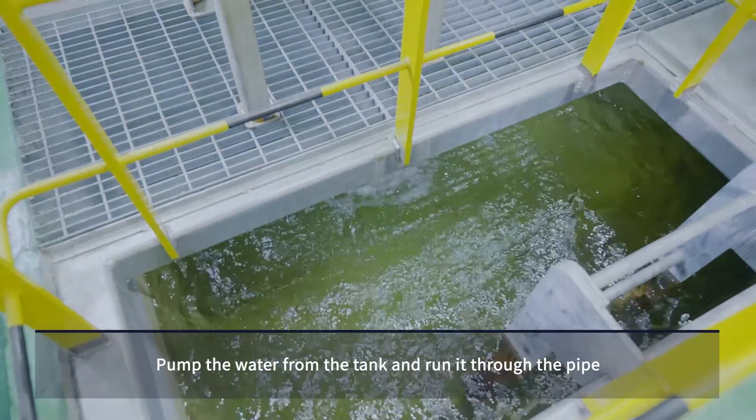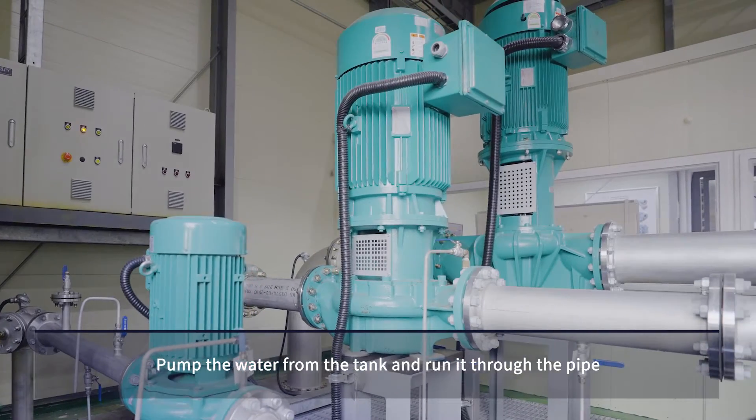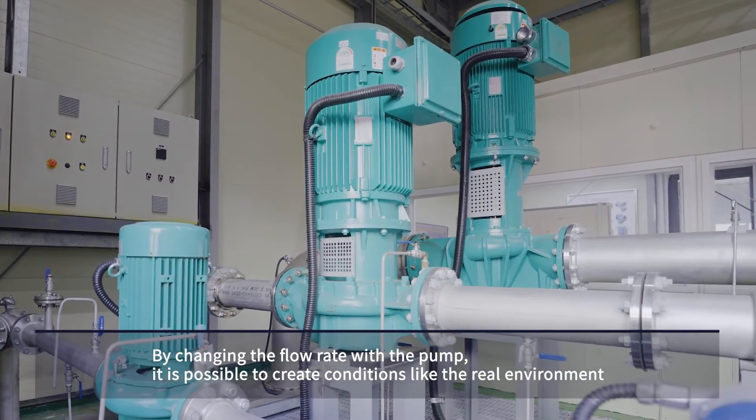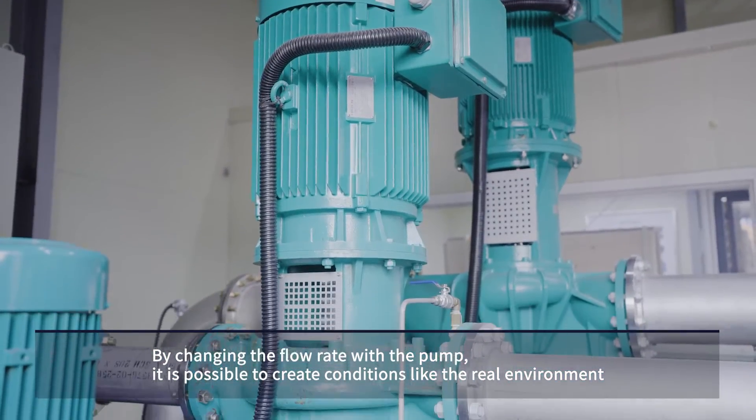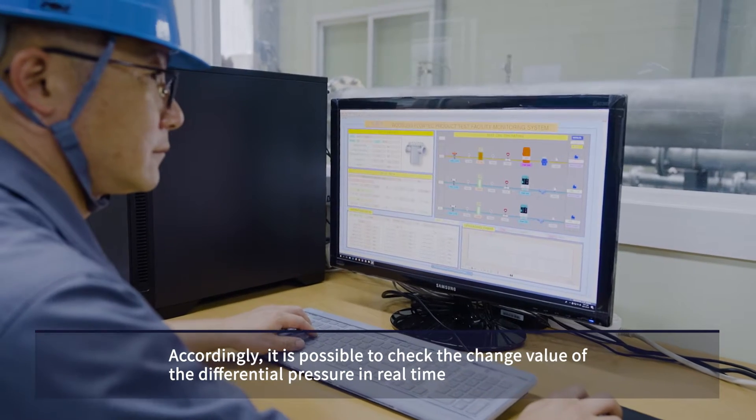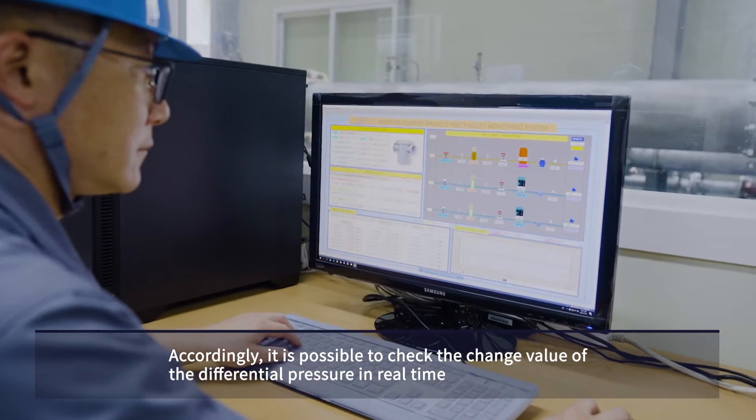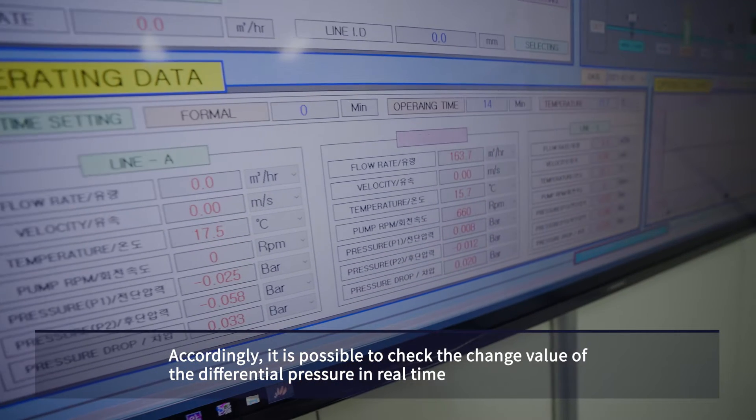Water is pumped from the tank and run through the pipe. By changing the flow rate with the pump, it is possible to create conditions like the real environment. Accordingly, it is possible to check the change value of the differential pressure in real time.